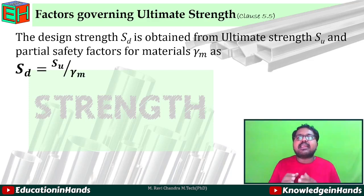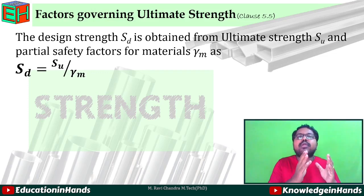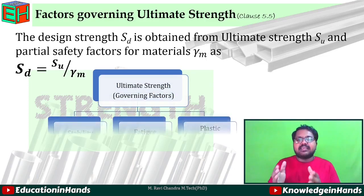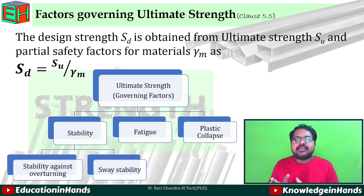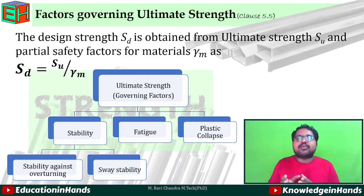Factors governing the ultimate strength — as per clause 5.5, the design strength is obtained from ultimate strength, which is our failure criterion. This ultimate strength is majorly governed by: stability, fatigue, and plastic collapse. Within stability, we consider stability against overturning and sway stability. If the material satisfies all these governing factors, it can achieve the required ultimate strength.